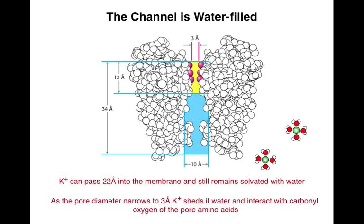The potassium channel is water-filled. So potassium can pass around 22 angstroms within the channel and still remain solvated with water. We know that the potassium ion hydrogen bonds with water and therefore is surrounded by a water shell, so it can pass somewhat into the channel and still keep its water shell.